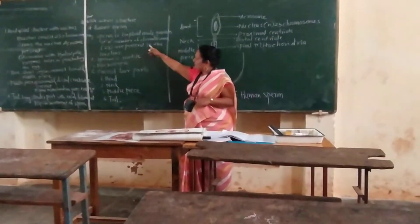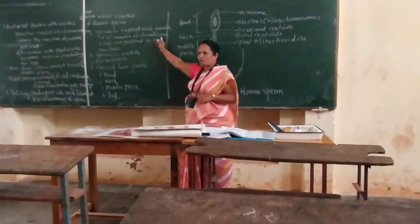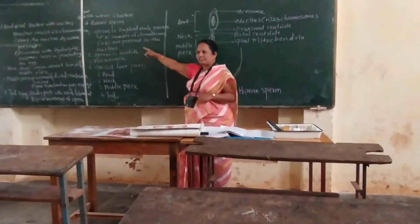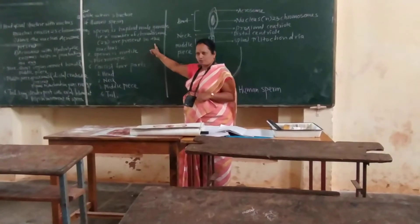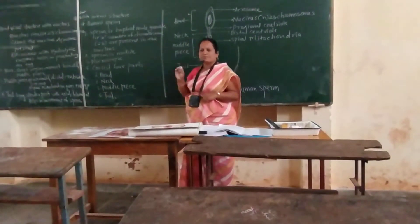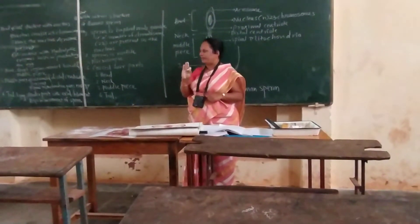That is, it consists of n number of chromosomes, that is 23 number of chromosomes. Therefore, sperm is haploid.